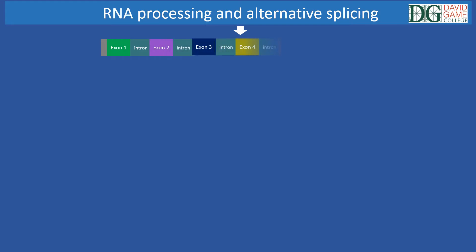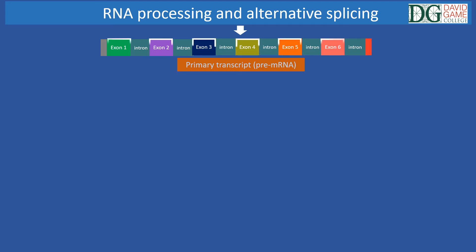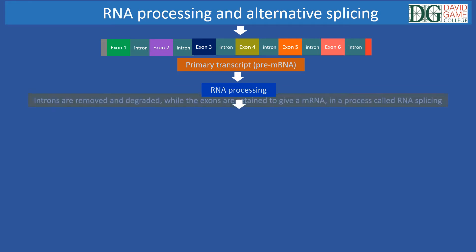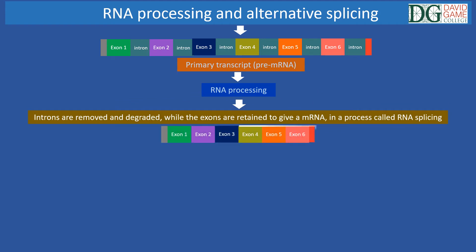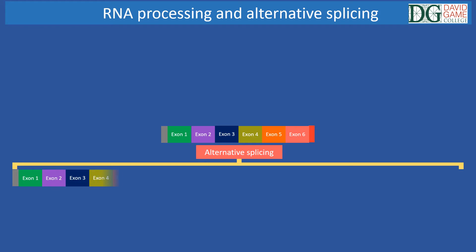Now let's talk about RNA processing and alternative splicing. The initial transcript produced in the nucleus is called the primary transcript or pre-messenger RNA and contains both introns that are non-coding and exons that are coding segments of DNA. The primary transcript undergoes various types of processing, generally called RNA processing. The introns are removed and degraded, while the exons are retained to give a messenger RNA, in a process called RNA splicing.